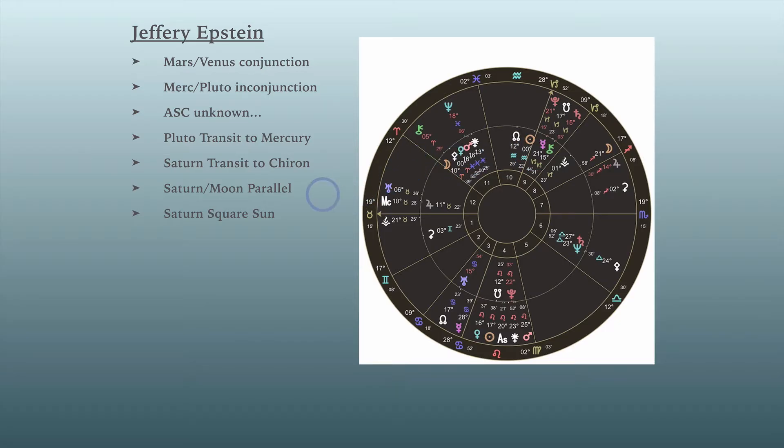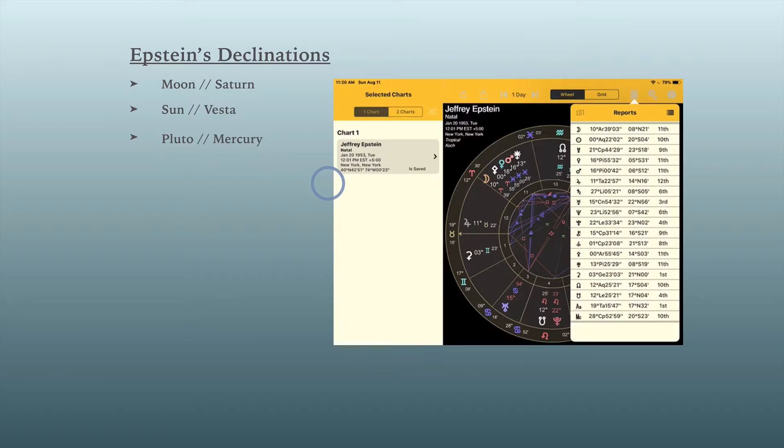I also got into looking like last week, I look at Tulsi Gabbard's declinations, which many astrologers do not use. And let's move on to that. This is Epstein's declinations because unless you look at the declinations, you wouldn't see that he had a moon parallel Saturn.